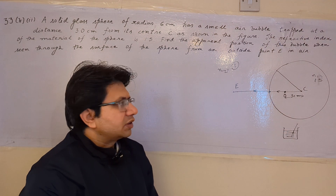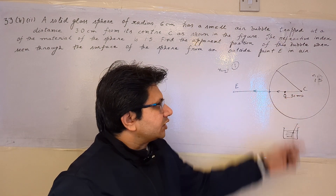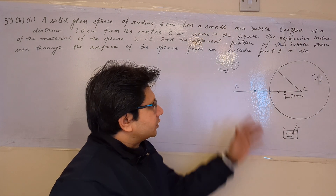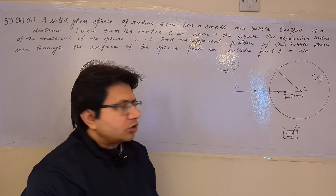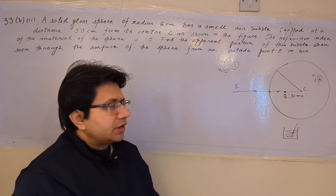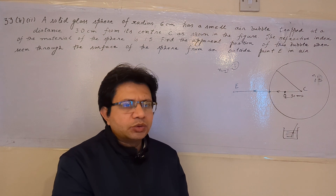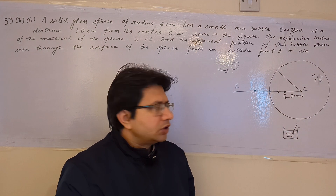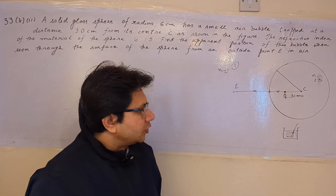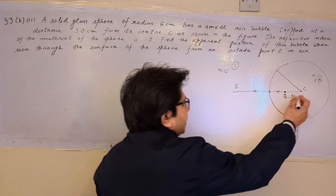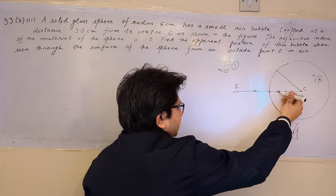In this question, we have a glass sphere, and inside the glass sphere there is a point air bubble which is 3 cm from its center. The reason for the apparent shift is the refraction process. Due to refraction, there is a change in the apparent position. Now, when a light ray goes in the direction of the line joining O to E, it does not deviate — it moves in a straight path.